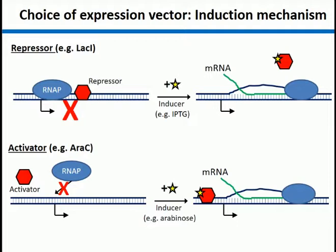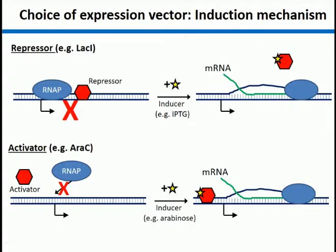There are two main mechanisms for inducible expression: repressors and activators. You should all be familiar with repressors from the lac operon. The lac operon works on the basis of a repressor: you have a lac repressor called LacI, which binds the DNA at the lac operator and prevents transcription of the lac operon. In the presence of an inducer like IPTG or lactose, the lac repressor lets go of the DNA and the RNA polymerase is free to make lots of mRNA. In the case of your protein of interest, you could encode it just downstream of the lac repressor and get production of your protein.